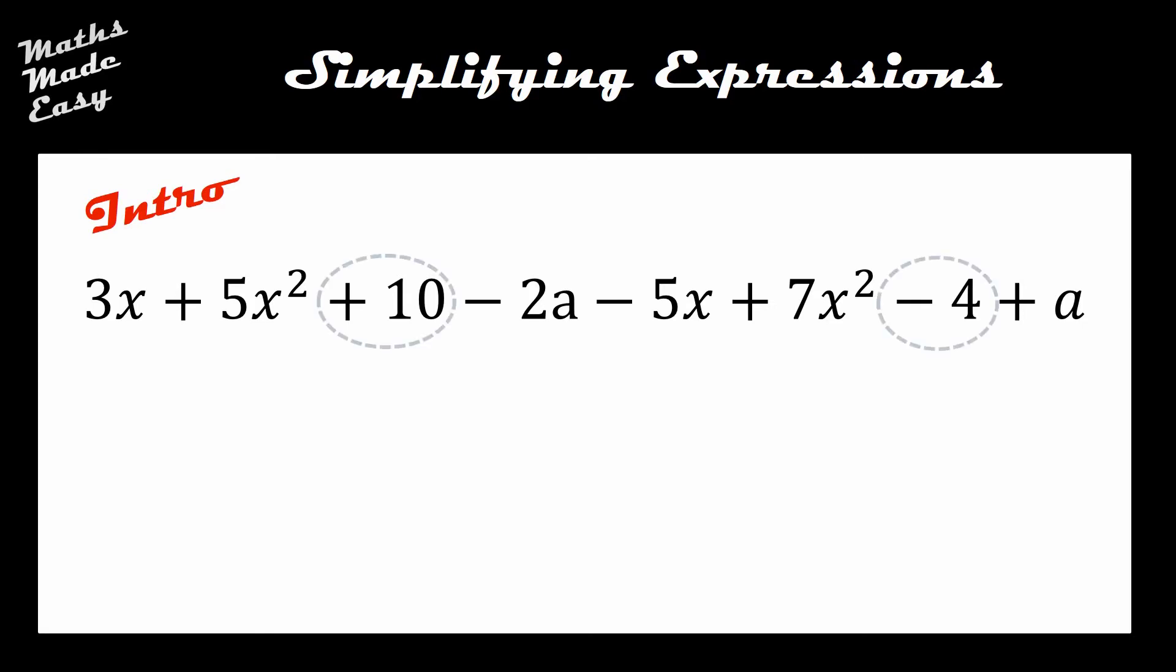So let me show you what I mean by that. If I just highlight the plus 10 and the minus 4, they're from the same category because they're both integers. They don't have any x's in, they don't have any x squareds in, they don't have any a's in or b's or c's for that matter, they are just pure numbers. So my positive 10 and my negative 4. What's also important to remember here is that you include the signs with your terms just so we don't get confused and accidentally add 4 to this when we should be taking 4 away.